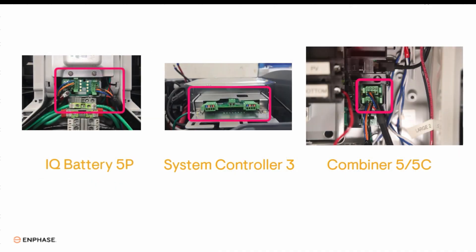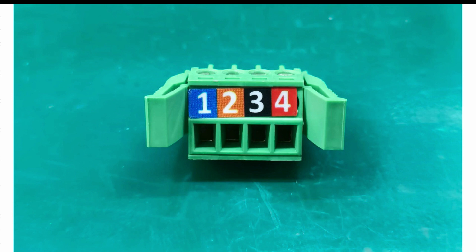Each device has two removable connection header blocks to connect the control cable wires into. This will make it easier to wire up. The header blocks have terminals that are color coded and numbered.